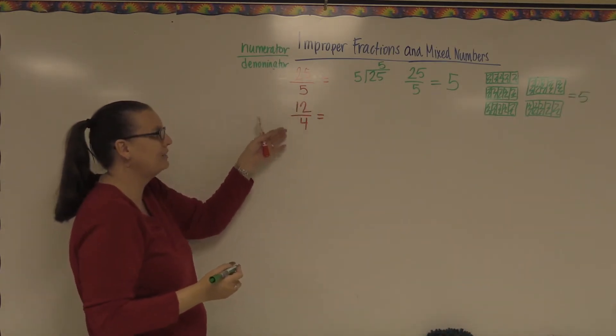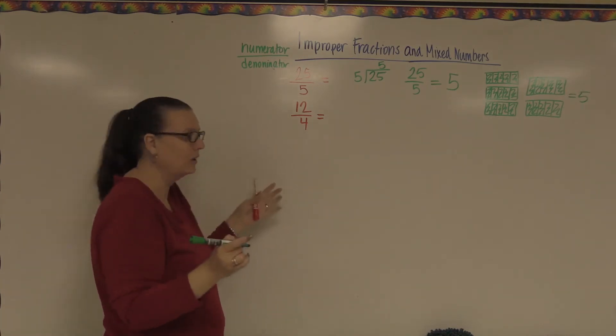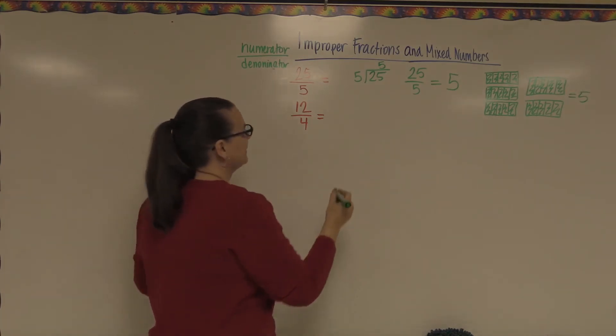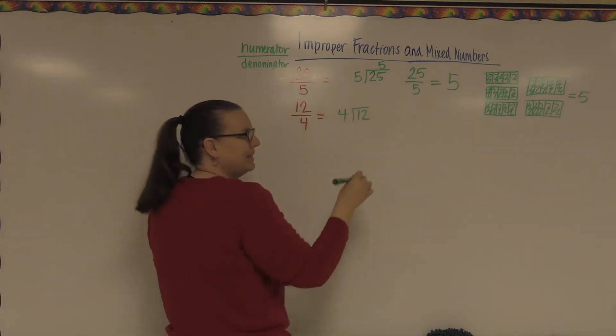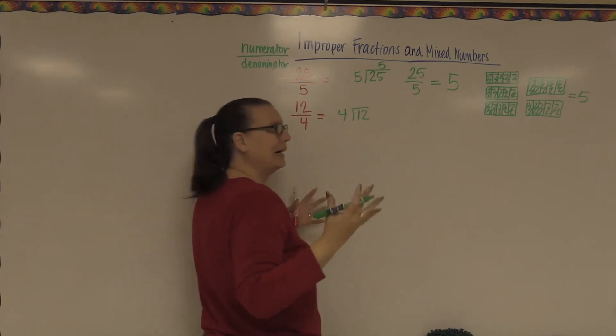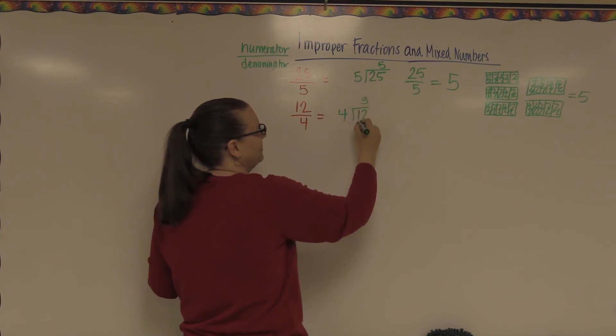Down here in this fraction, I'm saying that it takes four pieces to make one whole, and I have 12 pieces. So if I take 12 and I divide it by four, I'm going to see how many wholes we can make. We'll stick with chocolate bars again. How many fours fit into 12? Well, three, right?